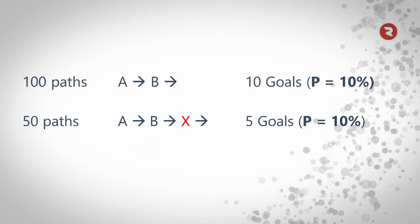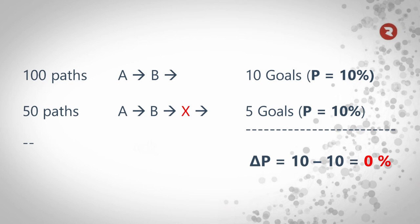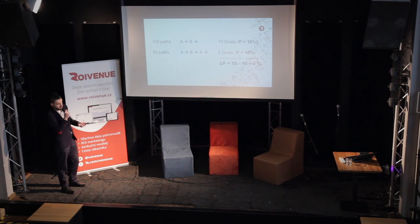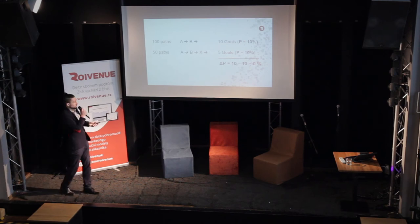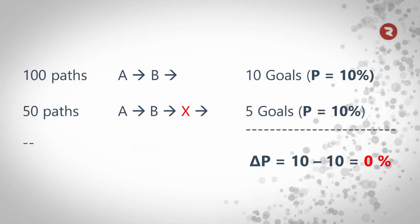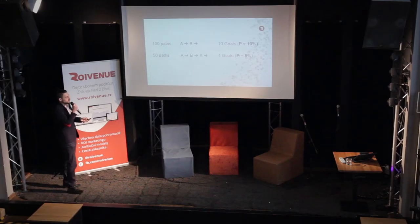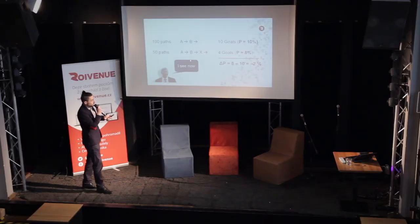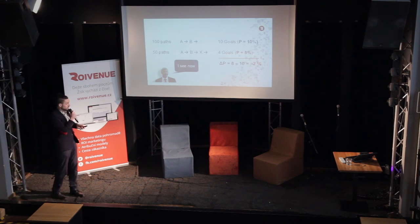In a different example, what changed is only that the number of conversions went down from 6 to 5. So now channel X is bringing zero improvement — the probability is still 10% with or without X. And it can get even worse: imagine you added channel X and it actually lowered the probability of conversions. The channel is making your campaigns worse. But if you use last click, you could still think it's making 100% of your money — when in reality it's losing you money. That's why it's important to look at proper attribution models.